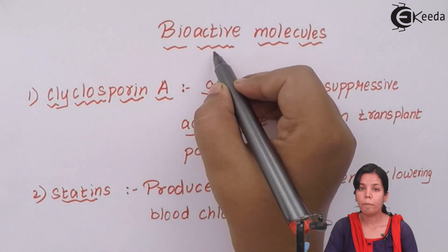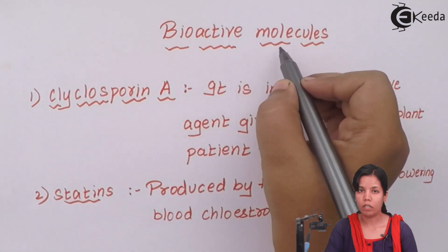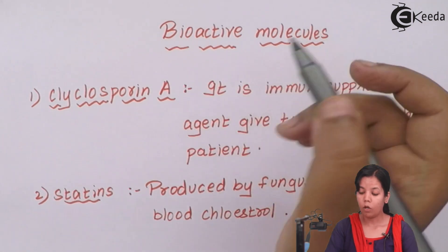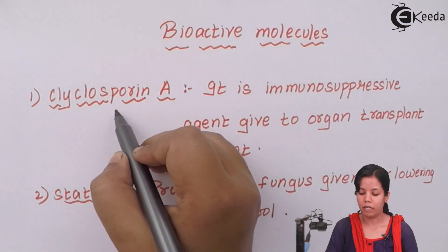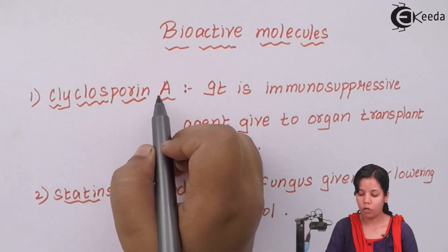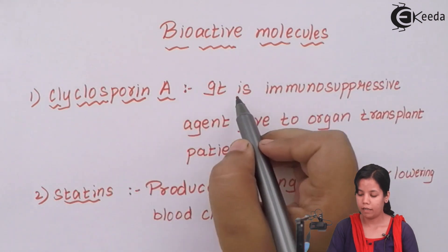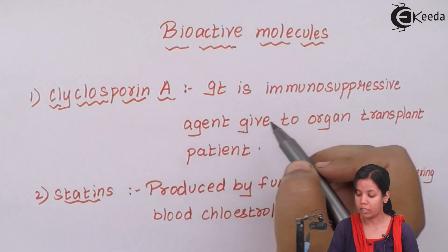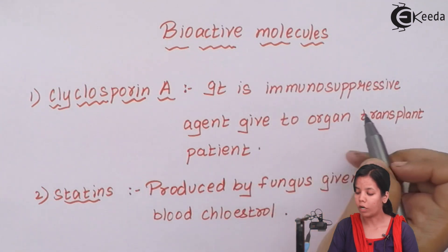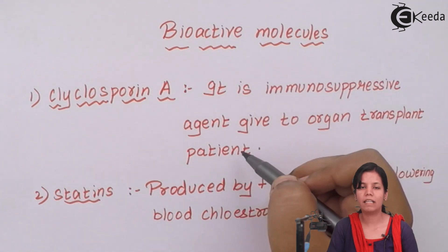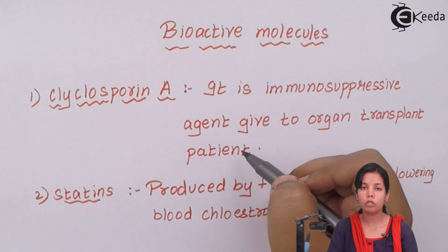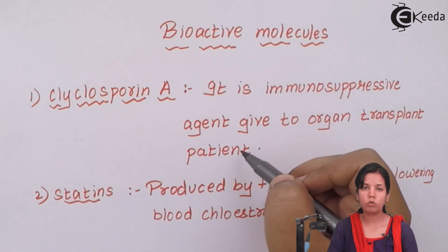Let us see what bioactive molecules are. One example is cyclosporine, an immunosuppressive agent given to organ transplant patients. Cyclosporine is given to patients who have undergone kidney transplant so as to suppress or slow down their immune system.